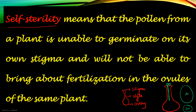If pollen tube germination occurs, then only the male nuclei will come to the female nucleus to form a zygote. Self-sterility means the pollen is unable to germinate on its own stigma and will not be able to bring about fertilization. If this growth is not taking place, how will the nuclei travel to the egg and fertilize it to form a diploid zygote? If pollen tube germination is not taking place, there is no fertilization in the ovules of the same plant.